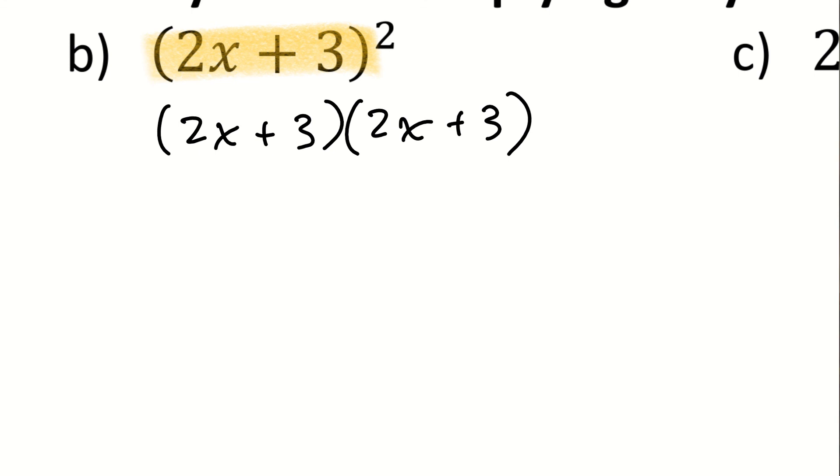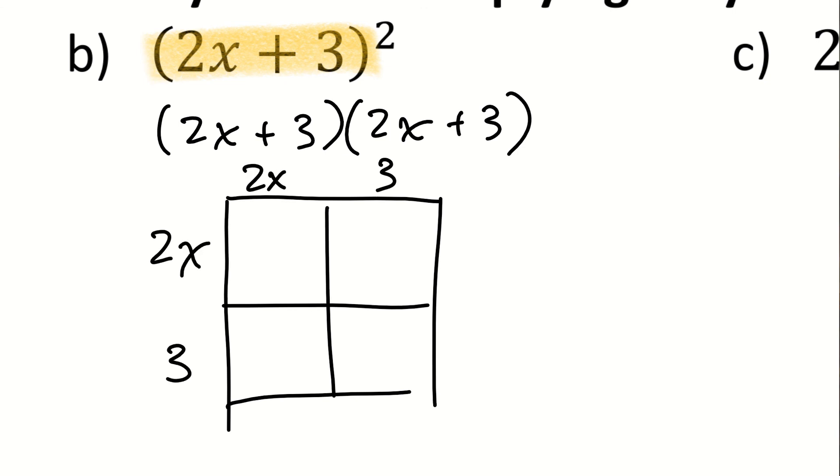Fabulous. So when I do that, I end up getting what? Well, let's see. Across the top, I'm going to go ahead and write a 2x and a positive 3. And then down on the side, a 2x and a positive 3. This first box is 4x squared. That's the 2x times another 2x.